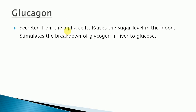Another hormone is glucagon, secreted from the alpha cells. Its function is the reverse of insulin. When there is a low blood sugar level, glucagon is secreted to raise it. It stimulates the breakdown of glycogen stored in the liver back into glucose, thereby releasing glucose into the blood and raising the blood sugar level.